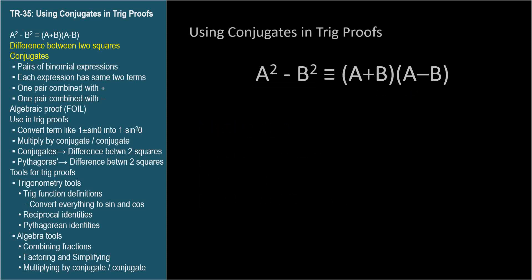Multiplying conjugates always yields the difference between two squares. And the difference between two squares can always be expressed as the product of two conjugates.